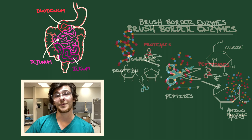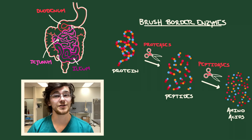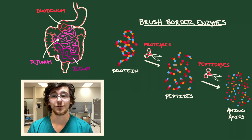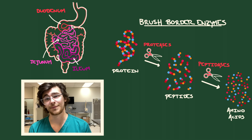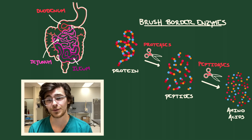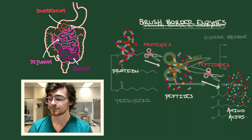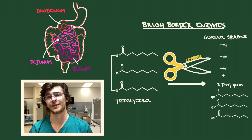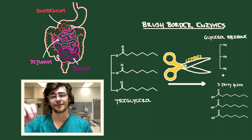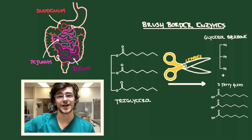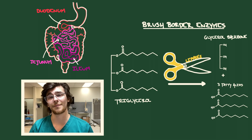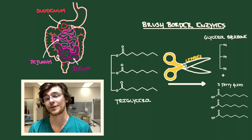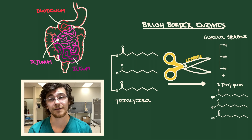We also have peptidases, which yield amino acids — the functional building blocks of proteins — and lipases, which yield the fatty acid chains and glycerol backbones that are the functional components of fats.